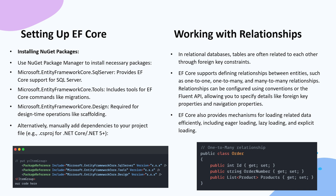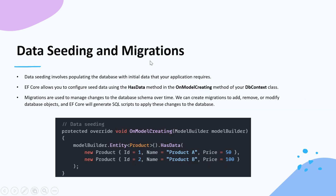Here is an example: we have a public class Order with properties like ID and order number, and then we have a relationship with a list of Products. That's how we can create relationships in EF Core.